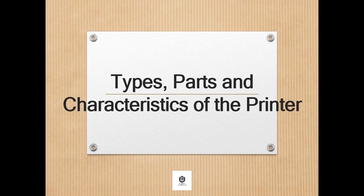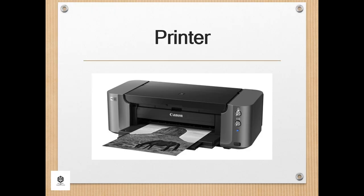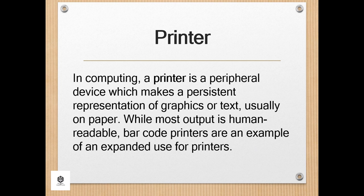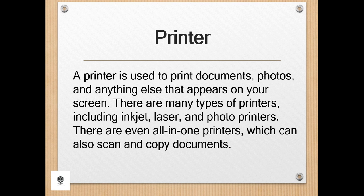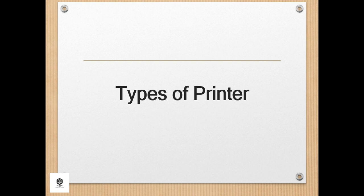Hello everyone. Today we will have a new lesson about types, parts, and characteristics of the printer. In computing, a printer is a peripheral device which makes a persistent representation of graphics or text, usually on paper. While most output is human-readable, barcode printers are an example of expanded use for printers. A printer is used to print documents, photos, and anything else that appears on your screen. There are many types of printers including inkjet, laser, and photo printers. There are even all-in-one printers which can also scan and copy documents.